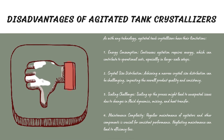Agitated tank crystallizers also have limitations. The first disadvantage is energy consumption — continuous agitation consumes significant energy, and in specialty chemical production, these energy costs can significantly impact overall production costs. The second disadvantage is crystal size distribution — achieving a narrow size distribution can be challenging. In the fertilizer industry, variation in crystal size can affect nutrient release rates of the final product, impacting its effectiveness.